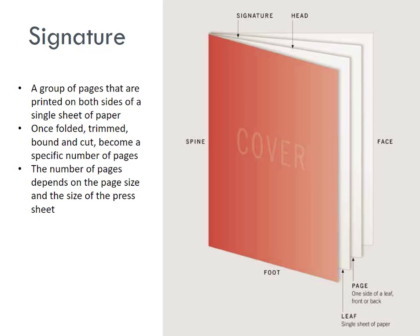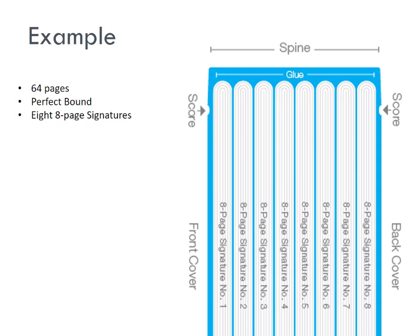A signature is a group of pages printed on both sides, which is then trimmed, cut, folded, scored, and bound into the finished piece. The signature is essentially the press sheet that makes up a bunch of pages. Take a look at the image here showing the signature, the page, and the leaf.